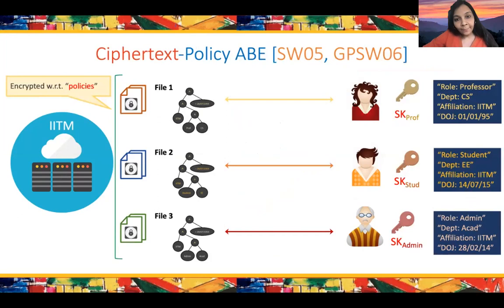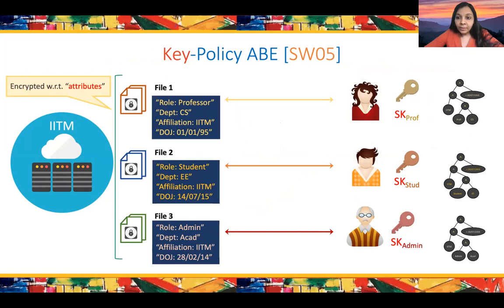ABEs come in two avatars. There's the ciphertext policy variant, which is what we've seen so far, where the ciphertext contains the access control policy. There's also the key policy variant, where you switch things around: the file contains the attributes and the secret keys of users contain the policies.